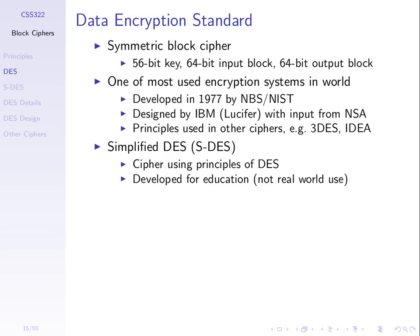DES is a symmetric block cipher that takes 64 bits of plain text input and produces 64 bits of cipher text as output, so it encrypts 64 bits at a time. It uses a 64-bit key as input, but in fact only 56 of those 64 bits are actually used in the encryption. The other 8 bits are a parity check.